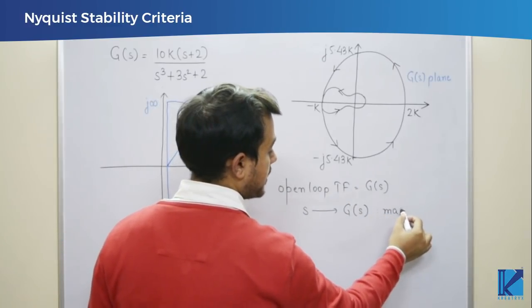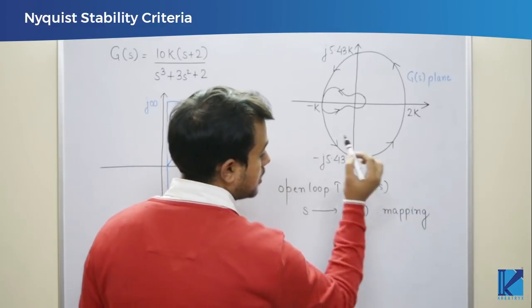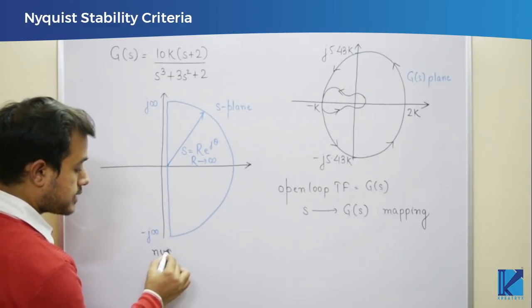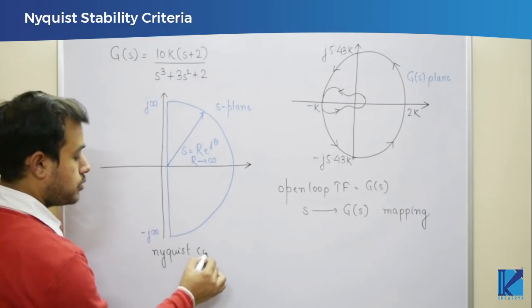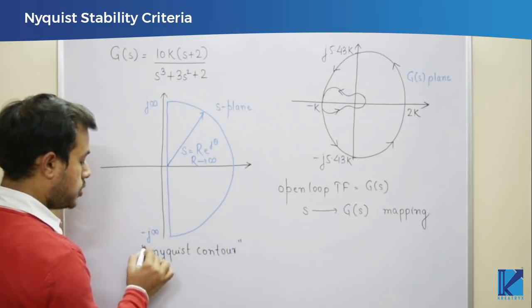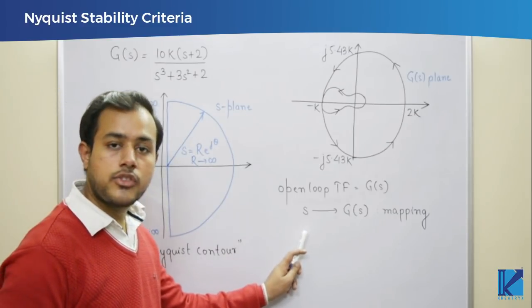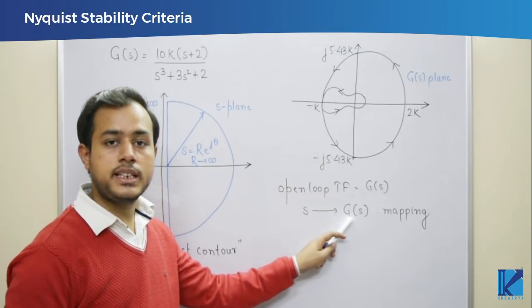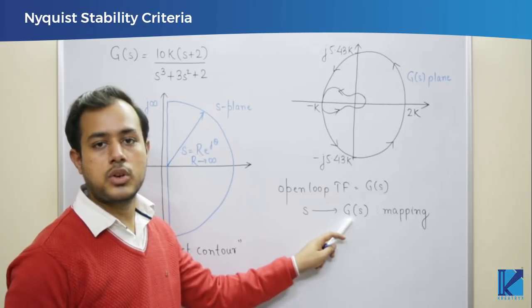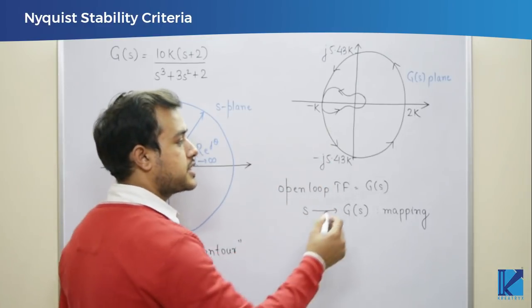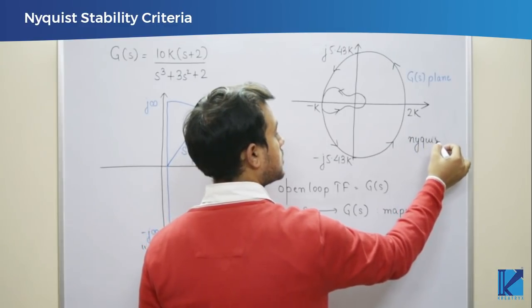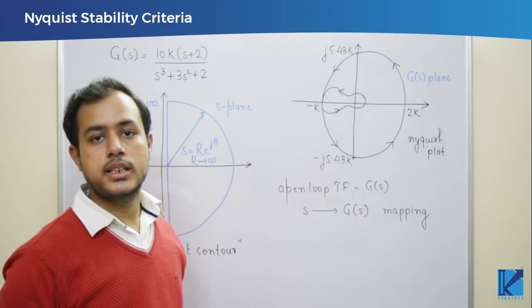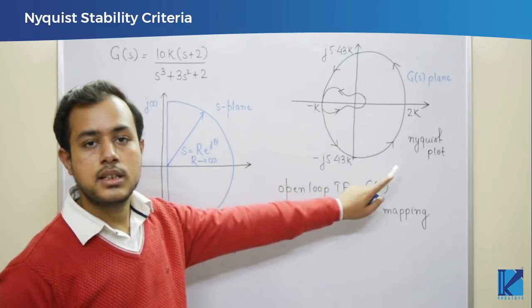This can also be called as mapping. When we try to draw the Nyquist plot, we take something called the Nyquist contour — a set of values of the variable s for which we will determine g(s). Once we have determined g(s), we plot all those values on a graph to derive the Nyquist plot. So g(s) is a mapping between the Nyquist contour and the Nyquist plot. The Nyquist plot is the set of values of g(s) derived from the Nyquist contour.